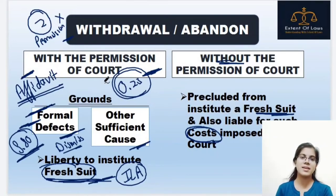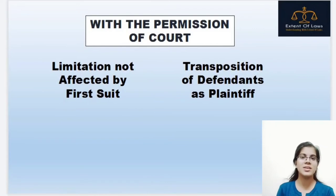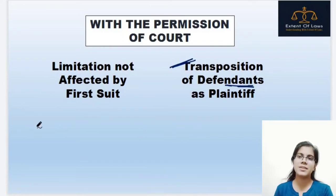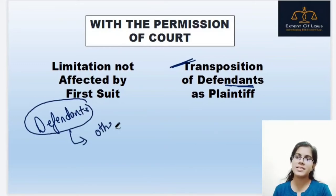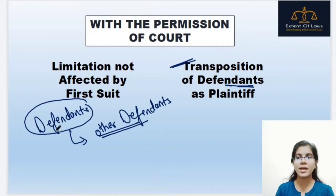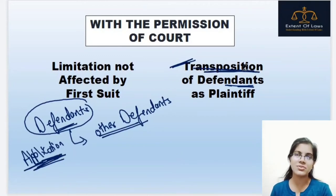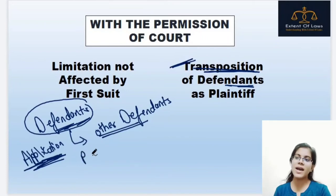If the plaintiff takes the case back and there are several defendants, one defendant can become a plaintiff against other defendants. Under Order 1 Rule 10, if one defendant has a claim against other defendants, that defendant can apply to the court to transfer their position as a plaintiff. If the court is satisfied, the defendant can be allowed to proceed as a plaintiff.